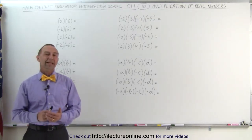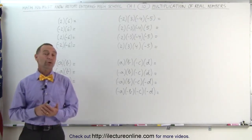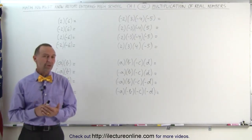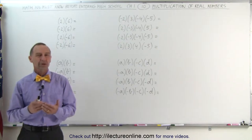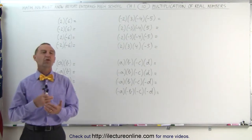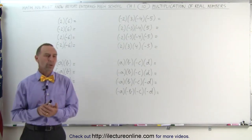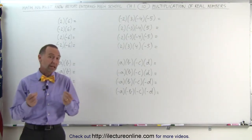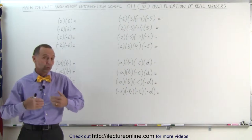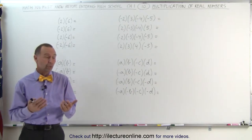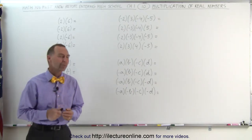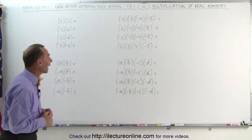Welcome to Electronline. In this video we're going to look at multiplication of real numbers and in particular the signs associated with them. What do you do when you multiply a positive and a negative number, or two negative numbers, or three negative numbers? Here are some examples to look at.